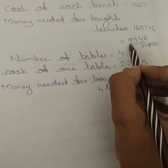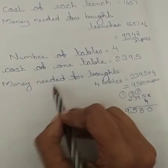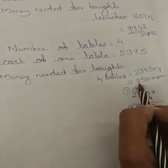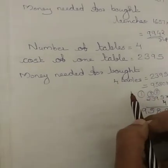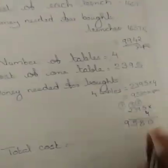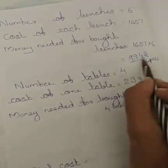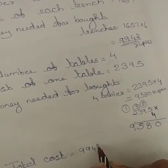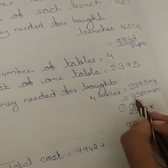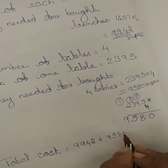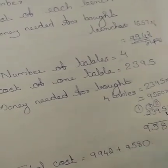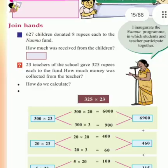Money needed for 6 benches equals 9,942 rupees. Money needed for 4 tables equals 9,580 rupees. What is the total money needed? Total cost equals the cost for benches — 9,942 — plus cost for tables — 9,580. When we add these two numbers we get the total cost. The next activity is 'Join Hands' — this is for you. Read these questions and find the answers. Do all of this work in your MAGS notebook. Let us see in the next class.